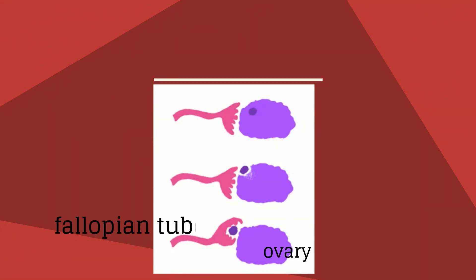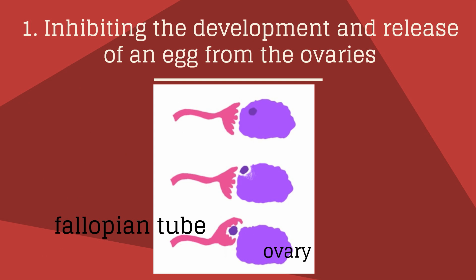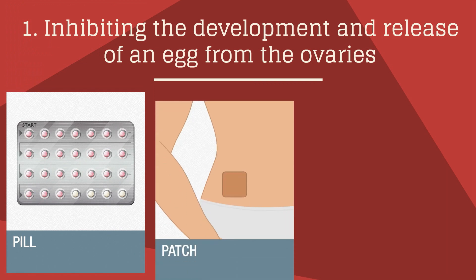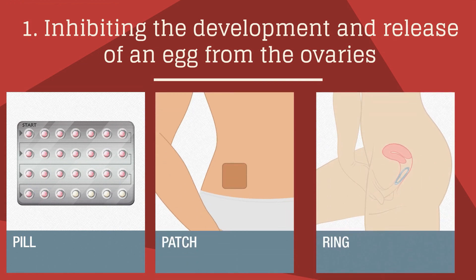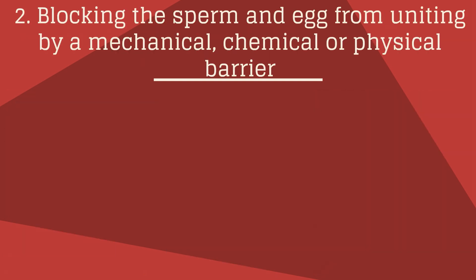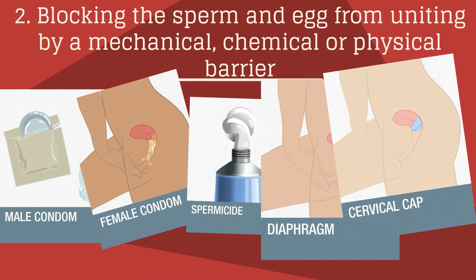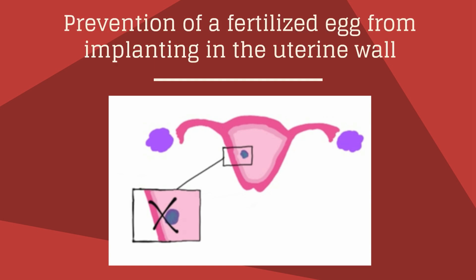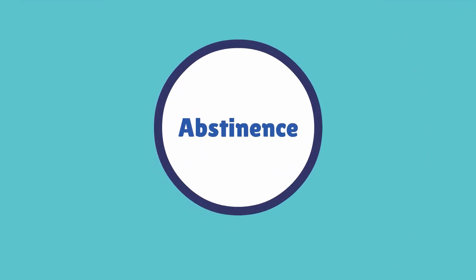Here is a drawing of an ovary releasing an egg into the fallopian tube. The first mechanism of contraception inhibits the development and release of this egg from the ovaries. The oral contraception pill, patch, and ring all work by inhibiting ovulation. If ovulation occurs, the egg travels in the fallopian tube, and the second mechanism is the blocking of sperm and egg from uniting by a mechanical, chemical, or physical barrier — such as a male or female condom, spermicide, diaphragm, or cervical cap. A secondary mechanism of some contraceptive methods may alter the ability of the fertilized egg to implant and grow, for example if an IUD is used as emergency contraception.